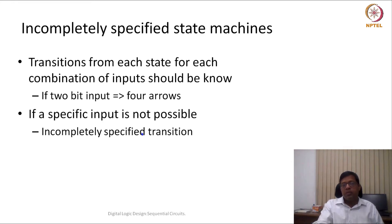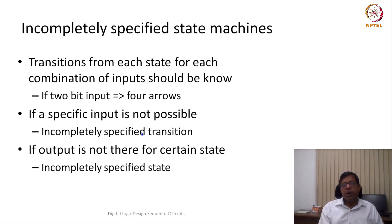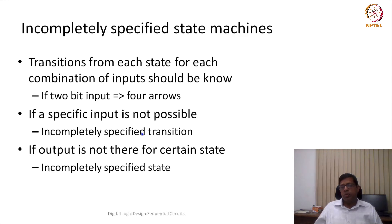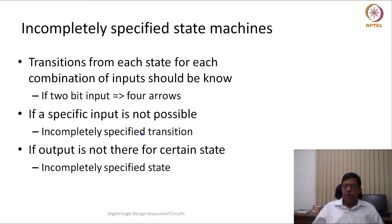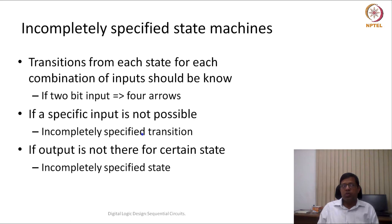There is also one more possibility: a state machine could be incompletely specified when an output is not defined for a certain state. In a Mealy machine, for a particular state transition from A to B, the output cannot be specified — there is no output. That means the output is a don't-care. When output is not specified, the state machine also becomes incompletely specified, presenting opportunities for optimization and state reduction.